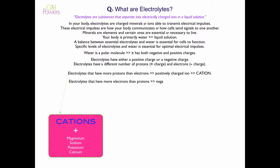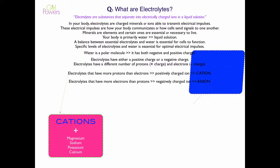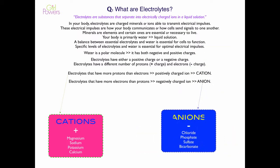Electrolytes that have more electrons than protons are negatively charged ions, or anions. The essential anions in our body are chloride, phosphate, sulfate, and bicarbonate. So we need all of these electrolytes to live and function properly.